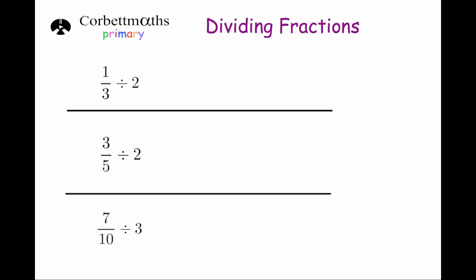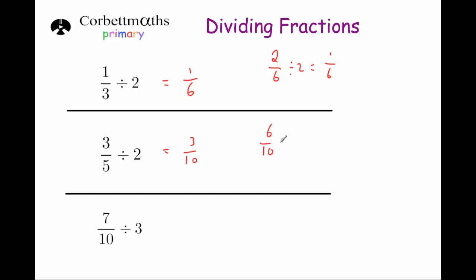Let's look at some questions. First, 1 third divided by 2. Using the shortcut, I just double the denominator to get 1 sixth. To verify with equivalent fractions: 1 third equals 2 sixths, and 2 sixths divided by 2 is 1 sixth — the same answer. Next, 3 fifths divided by 2. Because 3 isn't divisible by 2, I can just double the denominator to get 3 tenths straight away. Alternatively, 3 fifths equals 6 tenths, and 6 tenths divided by 2 is 3 tenths — the same result.